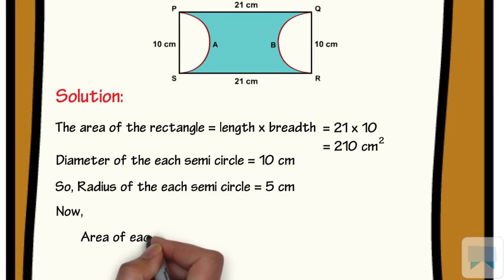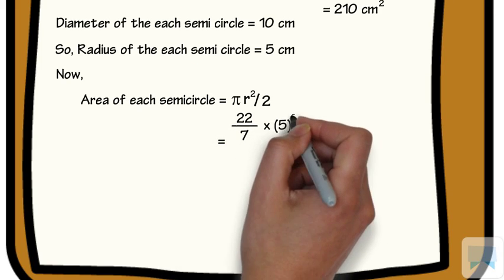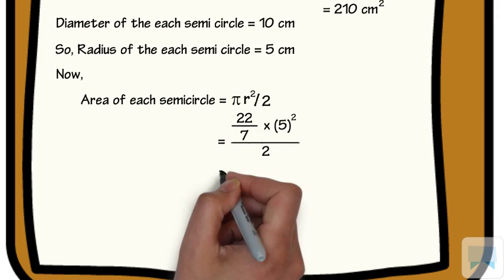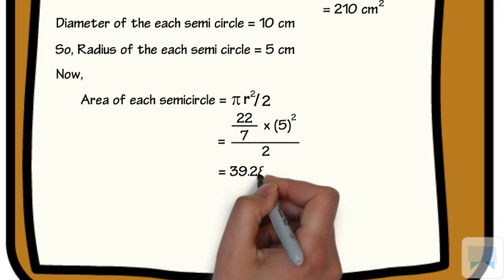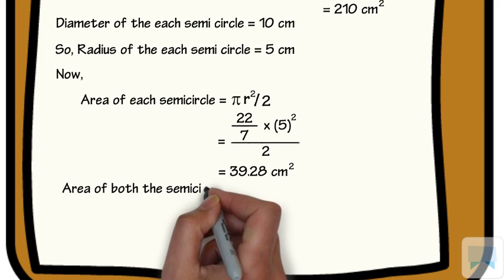The area of each semicircle is equal to πr² divided by 2, which is 22/7 times 5² divided by 2, equal to 39.28 cm². Area of both the semicircles is equal to 2 times 39.28.